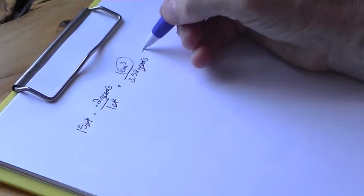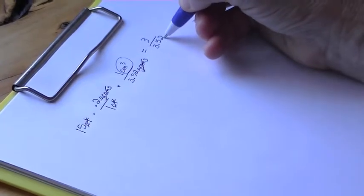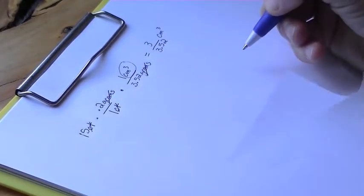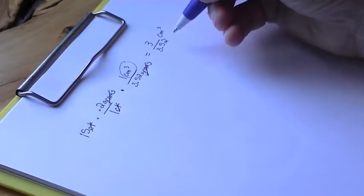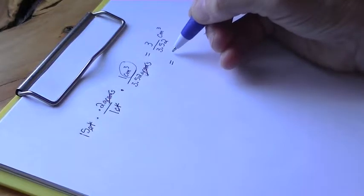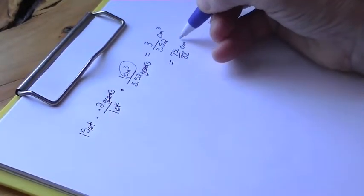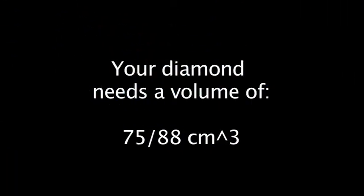15 times 0.2 is 3, so we end up with 3 divided by 3.52, and the unit is cubic centimeters. Cleaning that up into an exact fraction gives us 75/88 cubic centimeters — a slightly cleaner number. Remember, your diamond needs to have a volume of 75/88 cubic centimeters.